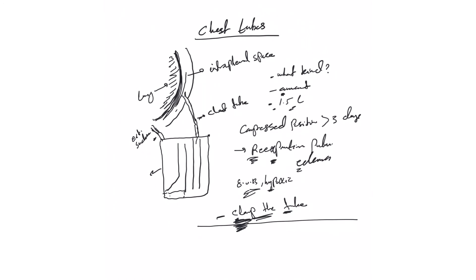But again with hemothorax, if you have a lot of blood pouring, this patient needs to go to the OR. So that's the initial things we look for with the initial drainage with chest tube.